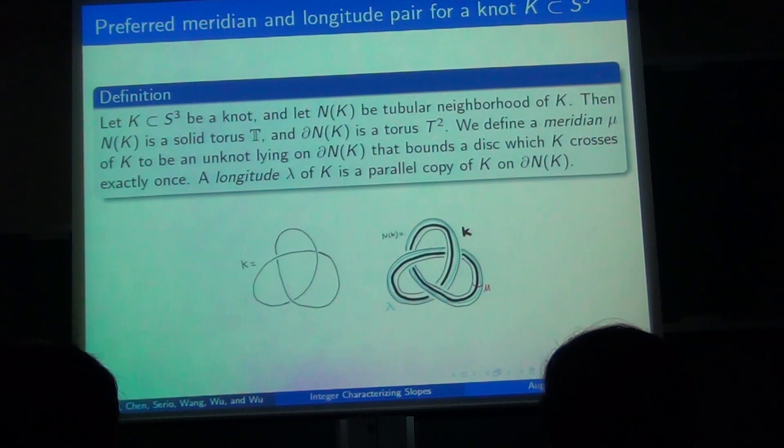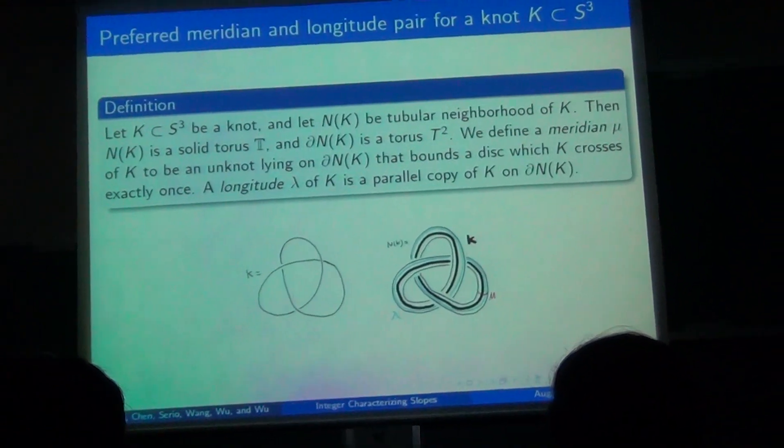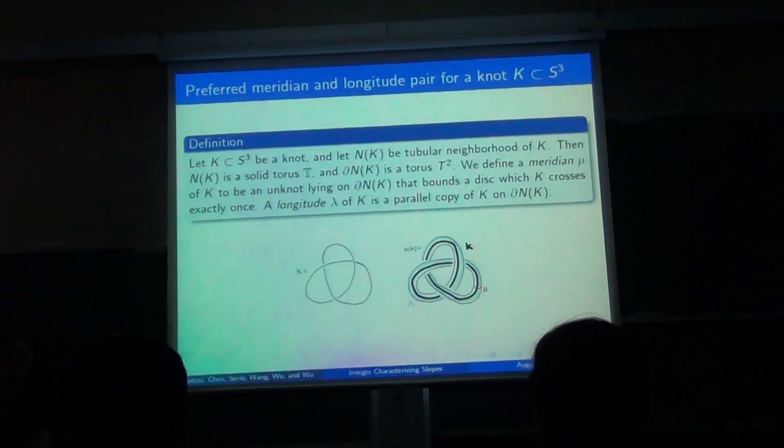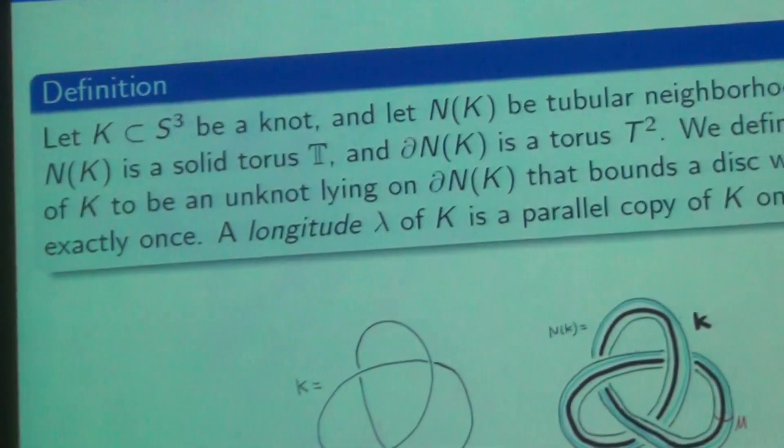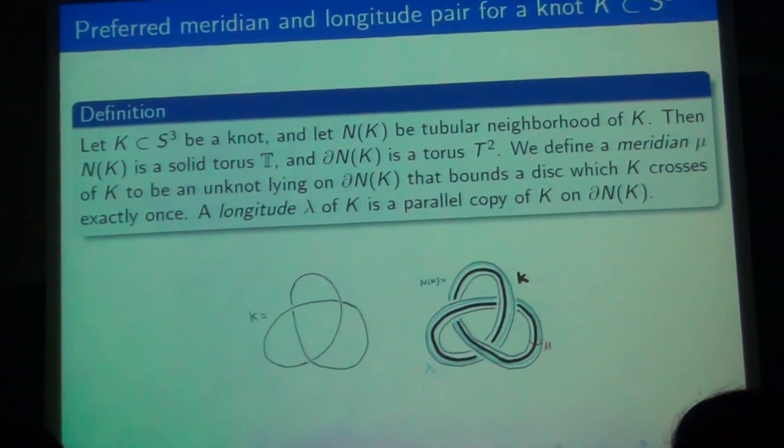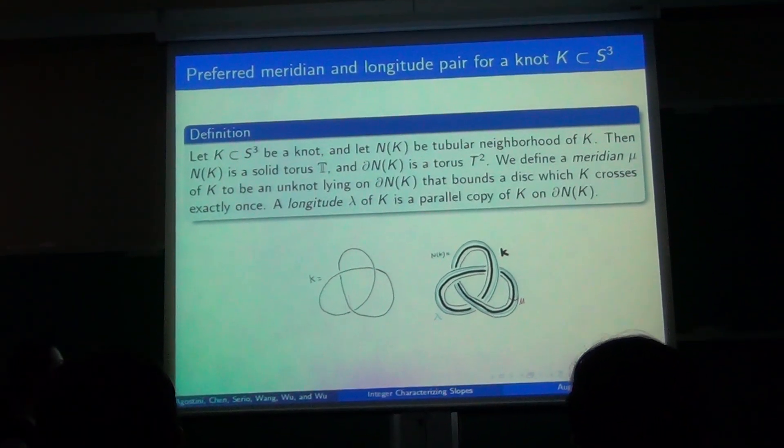Now I'll introduce several concepts before we introduce surgery on a knot. The first is that if K is a knot in S³, then its tubular neighborhood N_K here is diffeomorphic to a solid torus because K itself is homeomorphic to a circle.